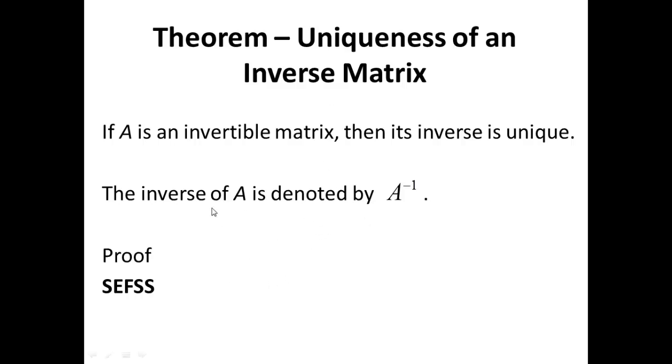Now suppose C is also an inverse of A, another inverse altogether. What does that mean? A times C equals C times A equals I. We now have two equations. So what I want you to do is play with these two equations and arrive at the conclusion that B must be equal to C, and you're done.